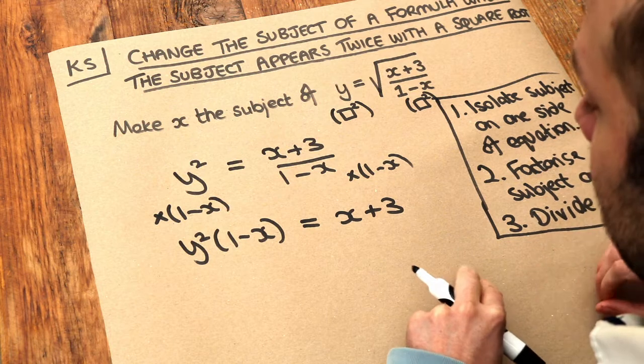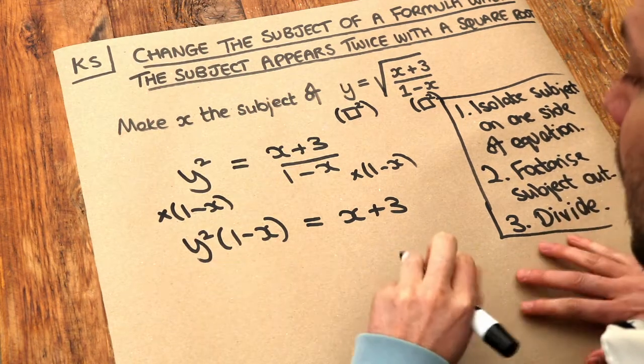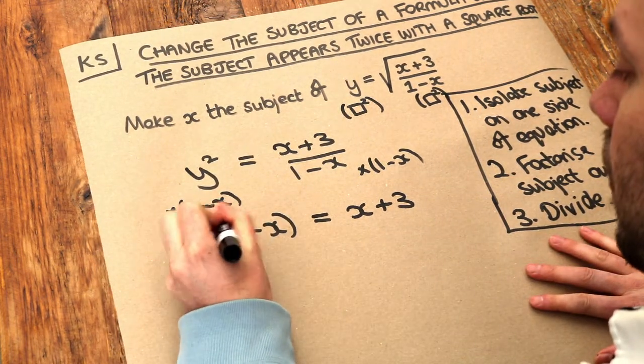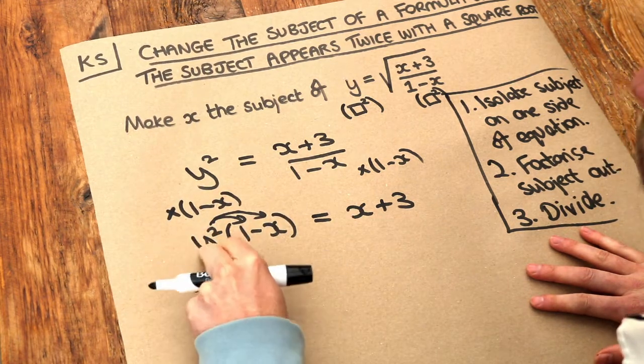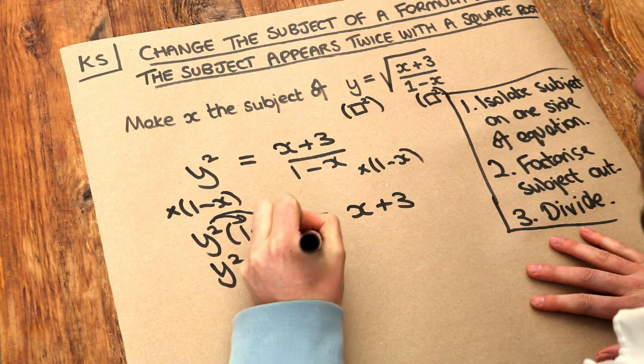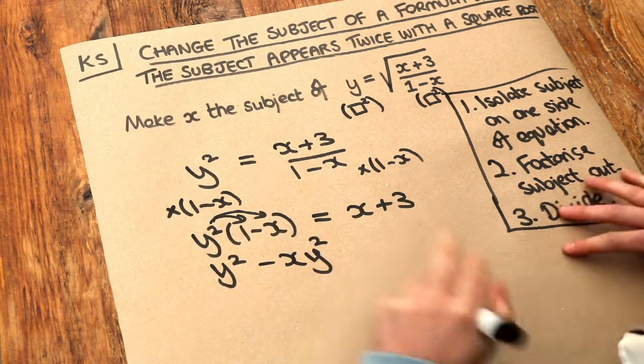And now the last thing to get x out in the open is to multiply out these brackets. So if we expand out the bracket, y squared times 1 is y squared. y squared times minus x is minus xy squared. Remember, alphabetical order, x first and y.